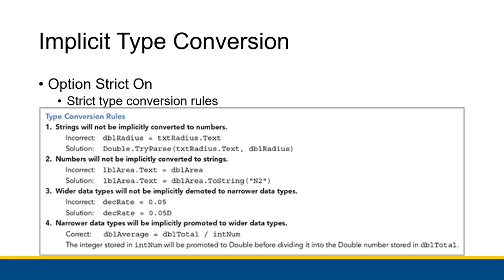The second rule under Option Strict On is that numbers will not be implicitly converted to strings. If we accidentally convert a number to a string, we can't do math on it anymore, and converting it back might choose the wrong type. We also can't specify formats with implicit conversion. So the solution is to disallow that and use the toString method instead.